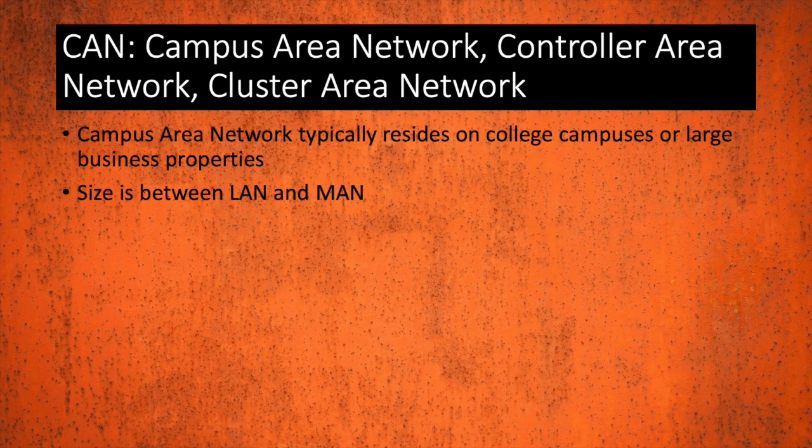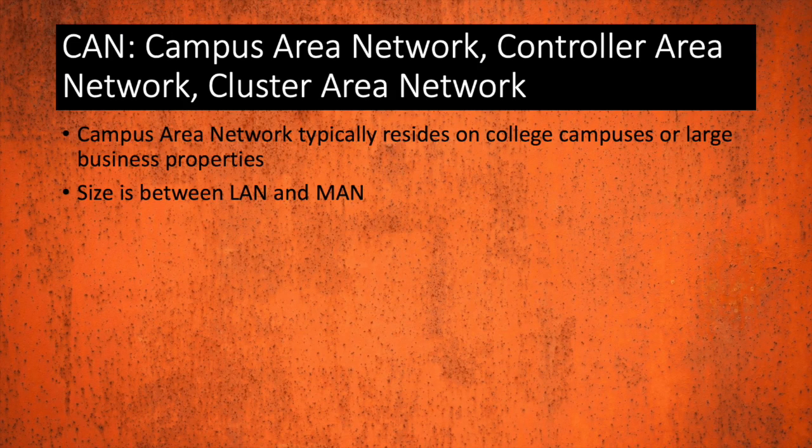A CAN is a campus area network, controller area network, or sometimes referred to as a cluster area network. A campus area network is pretty self-explanatory — it typically resides on college campuses or large business properties that house several buildings. They are between the size of a LAN and a MAN.